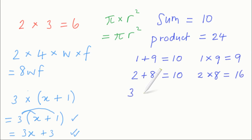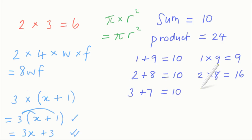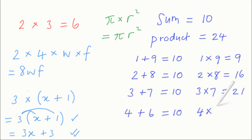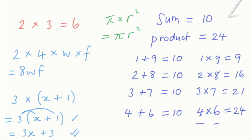What about 3 plus 7? 3 plus 7 equals 10, so the sum of 3 and 7 is 10. And their product — the answer you get when you multiply them together — is 21. So we're getting closer to 24. What about 4 plus 6? The sum of 4 and 6 definitely equals 10, and their product — the answer you get when you multiply them together — definitely equals 24. So the numbers 4 and 6 are the two numbers that answer this question.